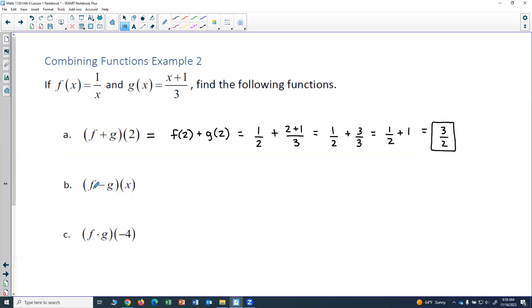Part B asks us to find f minus g of x, and using our definition for the f minus g, that would actually be f of x minus g of x. And so I take my f of x function, which is 1 over x, and I'm going to subtract my g of x function, which is x plus 1 over 3.